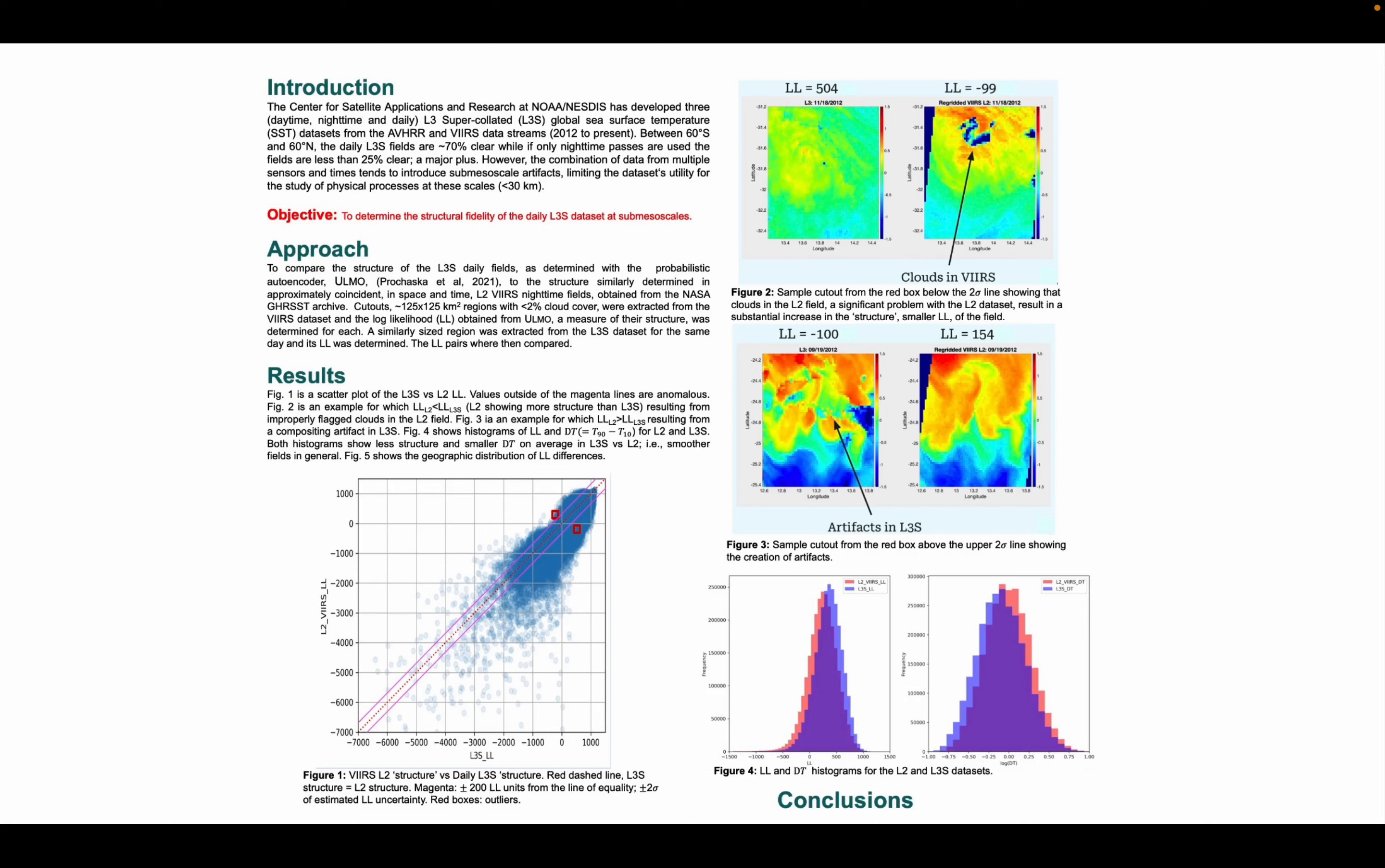To compare the fields, we took 125 by 125 km cutouts with less than 2% cloud cover from both the L2 VIRS nighttime fields and the Level 3 daily fields closest in space and time. Using a probabilistic autoencoder entitled ALMO as developed by Prochaska et al. 2021, each cutout is given a log-likelihood value which represents structure, which can then be compared between the VIRS and L3S cutouts.